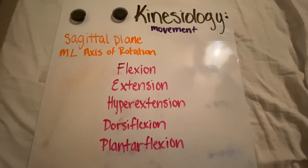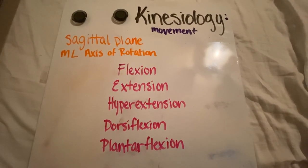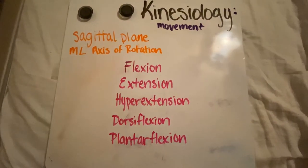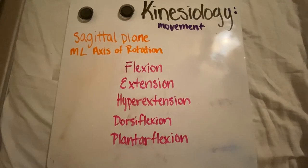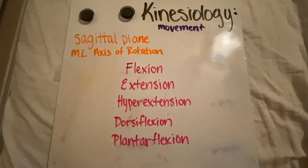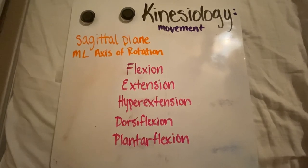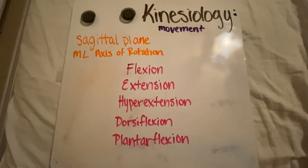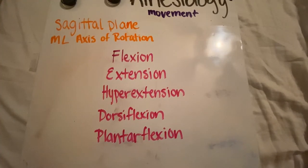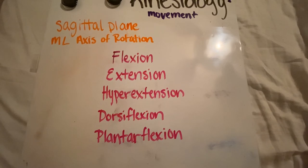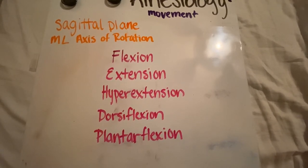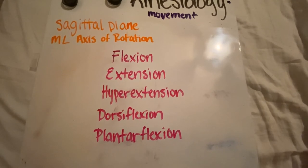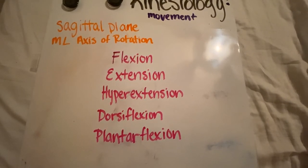Movements that happen in the sagittal plane include flexion, extension, hyperextension, dorsiflexion, and plantarflexion. Flexion happens when an angle at a joint is getting smaller. Extension happens whenever a joint goes past 180 degrees. Dorsiflexion and plantarflexion happen at the ankle: dorsiflexion is whenever the toes are pointed towards the anterior leg, and plantarflexion is whenever the toes are pointed towards the posterior leg.